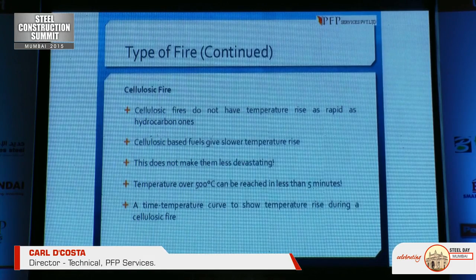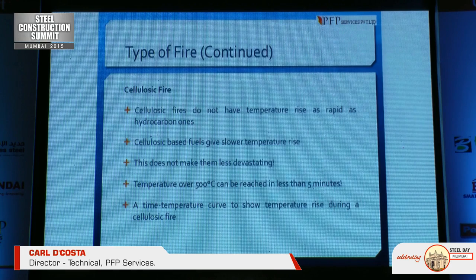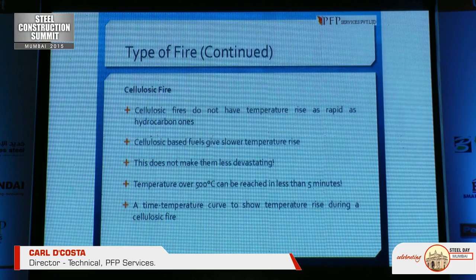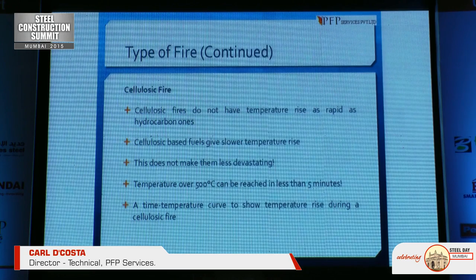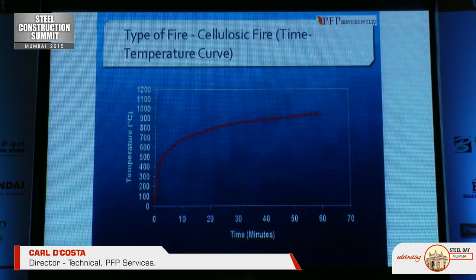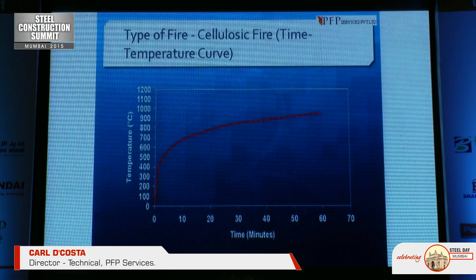Cellulosic fires do not have as rapid a temperature rise as hydrocarbon ones. Cellulosic-based fuels give slower temperature rise, but this does not make them less devastating. A temperature over 500°C can be reached in less than five minutes. The time-temperature curve shows the temperature rise during a cellulosic fire, reaching almost 700°C within less than 10 minutes in a full fire.